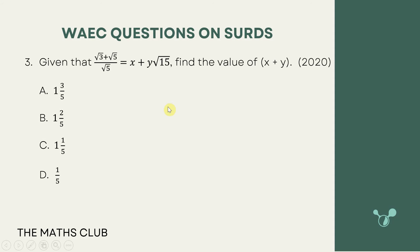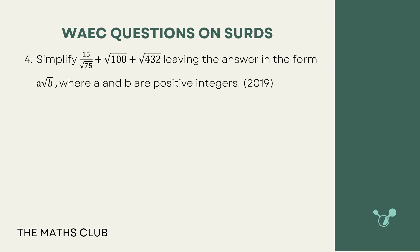So our answer is 6 over 5, or 1 and 1 over 5. Let's see which representation the objective question gives us — that's option C.